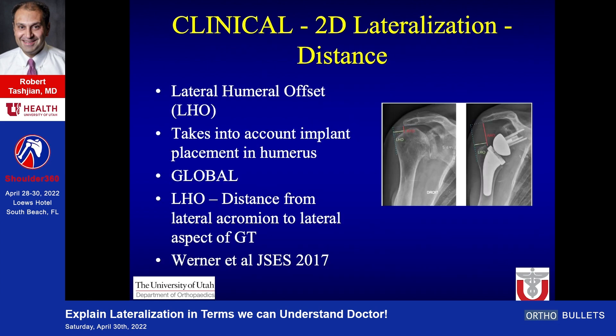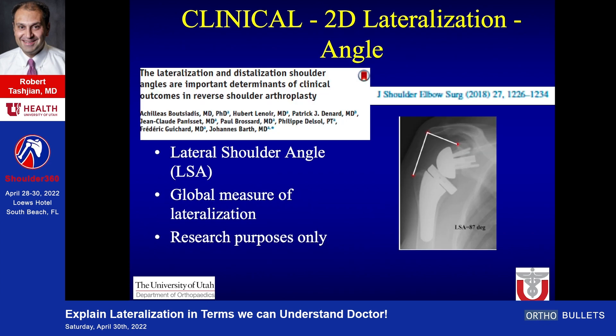Clinical lateralization is measured when the implant is placed in the shoulder. You can measure this in two dimensions by distance — this is the lateral humeral offset. It takes into account the implant being placed in the humerus or in the bone, and is a measure of global lateralization encompassing both the glenoid and humeral side. It is the distance from the lateral aspect of the acromion to the lateral aspect of the greater tuberosity. Gilles Walsh and Brigitte Warner originally described this back in 2017.